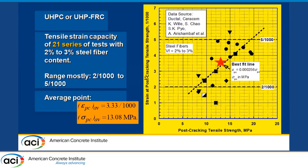Here I show data from 21 series of tests taken from six different investigations. Again, most data fall between the two-over-a-thousand and five-over-a-thousand marks. The average here is a little higher: 3.33 over a thousand for a maximum strength of 13.8 MPa. By the way, although we had this data, we never previously plotted it as strain versus stress in this fashion.